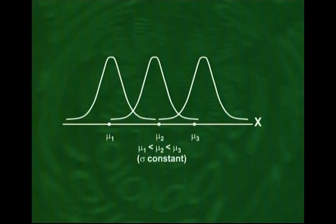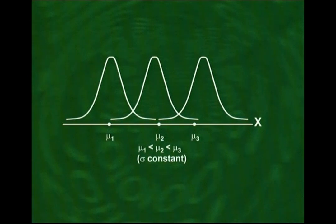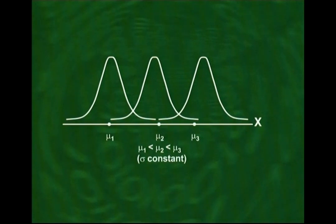Since mu represents the mean, it is a measure of location. As we change mu while keeping sigma constant, the normal distribution shifts its position on the x-axis. If mu1 < mu2 < mu3 but sigma remains constant, we have three identical normal distributions as far as spread is concerned, but located at three different positions on the x-axis — the one with the smallest mean toward the left and the one with the largest mean toward the right.